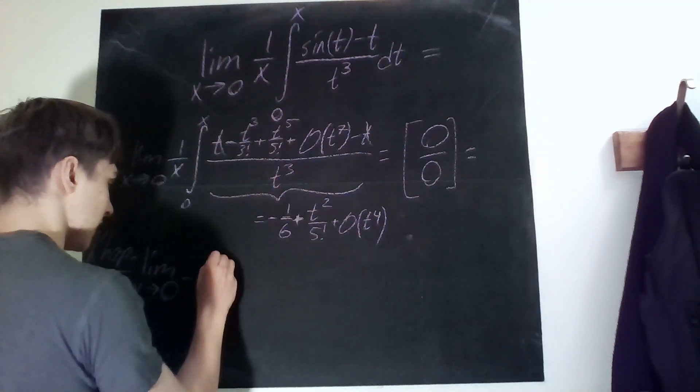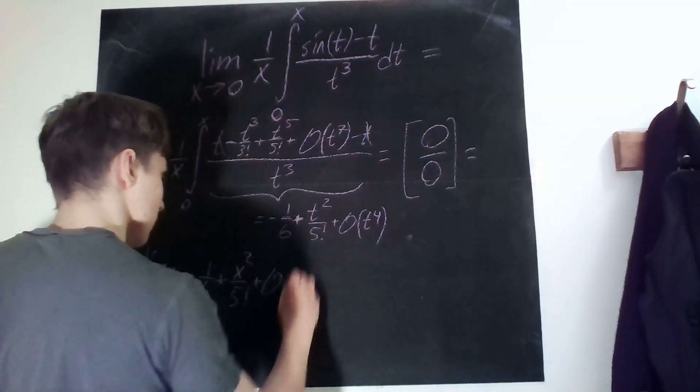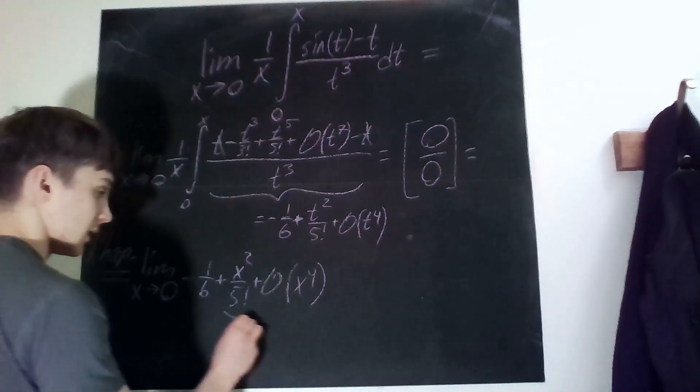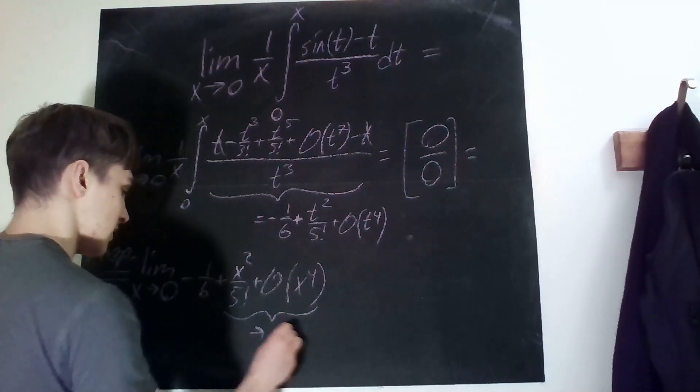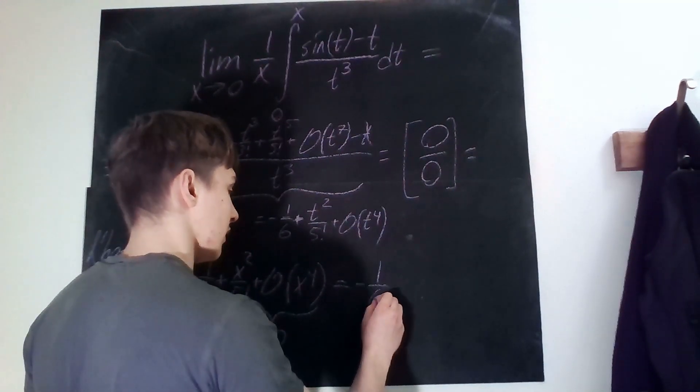It is just minus 1 over 6 plus x² over 5 factorial plus big O of x⁴. And then obviously this whole thing just tends to zero, so it is equal to minus 1 over 6.